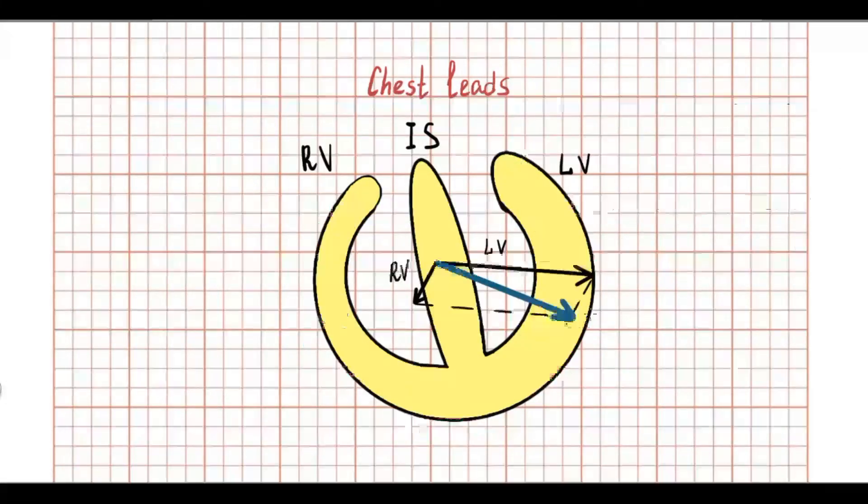As a result of left ventricular dominance, mean repolarization axis points to the left and downward. Therefore, mean depolarization axis has the same direction.